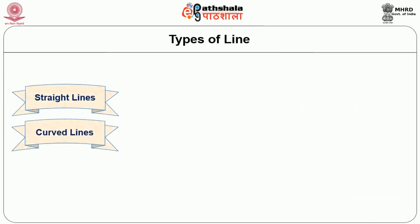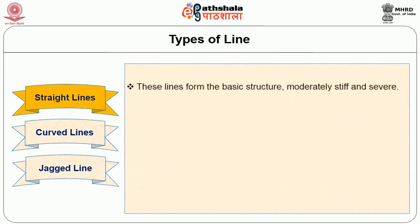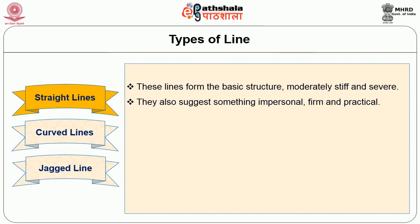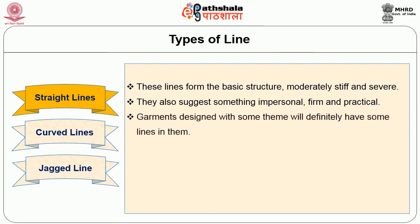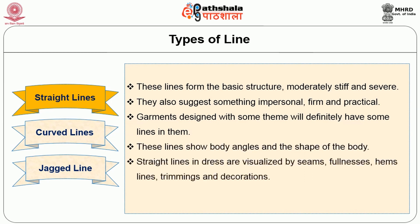There are different types of line. The lines may be divided into three different types. The first one is straight, the second one is curved, and the third one is a zagged line. Straight lines form the basic structure. They are moderately stiff and severe. Garments designed with some theme will definitely have some lines in them. These lines show body angles and shape of the body. Straight lines in dress are visualized by seams, fullnesses, hemlines, trimming and decorations.